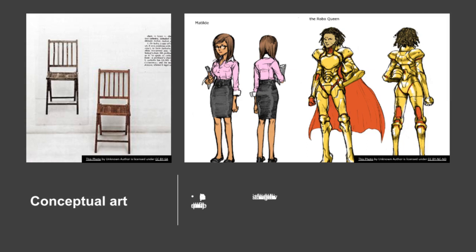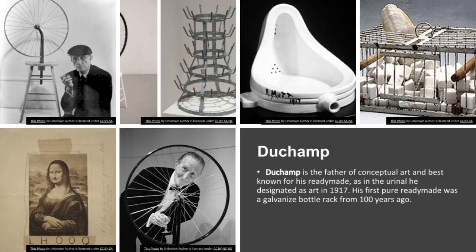One and Three Chairs, Joseph Kosuth, 1965: an actual chair in the center, with a photograph of the same chair and an enlarged copy of a dictionary definition of a chair. In conceptual art, the idea or concept is the most important aspect of the work. When an artist uses a conceptual form of art, all of the planning and decisions are made beforehand and the execution is a perfunctory affair. The idea becomes a machine that makes the art. Duchamp is the father of conceptual art, best known for his ready-made — such as the urinal he designated as art in 1917.